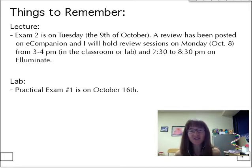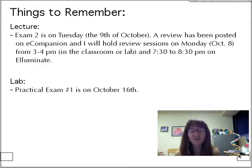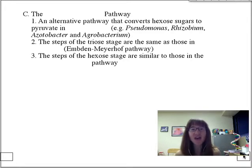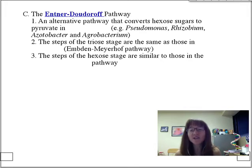Last time we talked about the most famous glucose-degrading pathways: glycolysis, also known as the Embden-Meyerhof pathway, and the pentose phosphate pathway. Today I want to cover a third pathway, because not all bacteria utilize those two. Some actually meld them in a pathway called the Entner-Doudoroff pathway. This pathway was once thought to be unique to soil microorganisms such as Pseudomonas, Rhizobium, Azotobacter, and Agrobacterium.